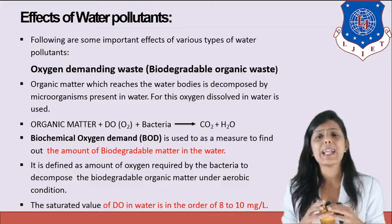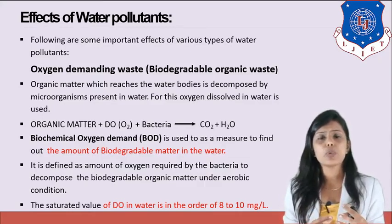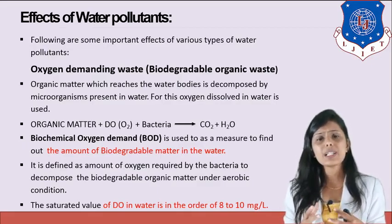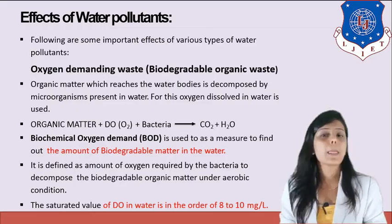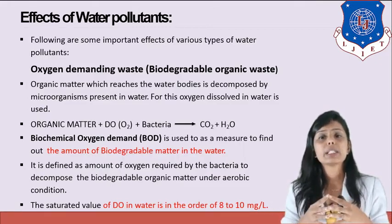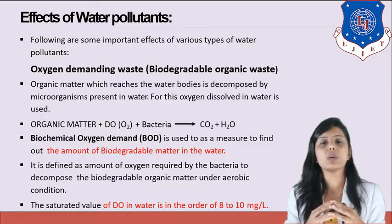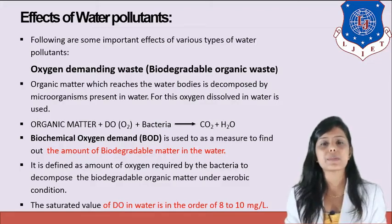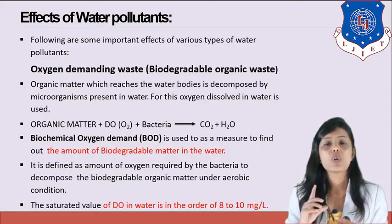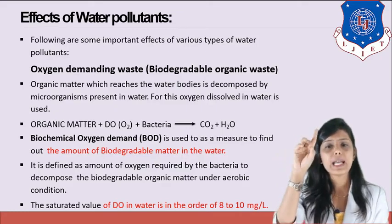The first type of effect is oxygen demanding waste. Organic matter which reaches the water body is decomposed by microorganisms present in the water. For this, oxygen dissolved in water is used. The decomposition is done by bacteria, which utilize oxygen present in the water. So: organic matter plus dissolved oxygen plus bacteria gives carbon dioxide and water.